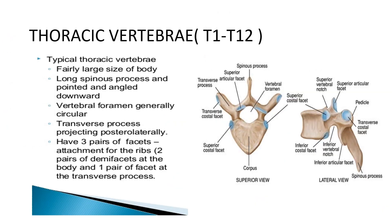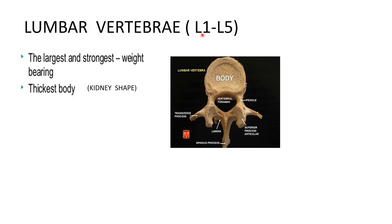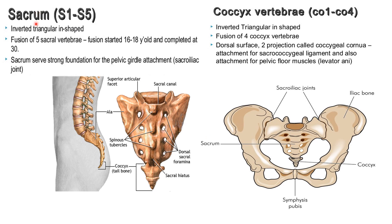Thoracic vertebrae have a large, heart-shaped body and their transverse process contains a facet for attachment of the ribs. Lumbar vertebrae (L1–L5) are the strongest and largest because they are weight-bearing; they have the thickest body and their body is kidney-shaped. The sacrum (S1–S5 fused) is inverted triangular in shape and forms a strong foundation of the pelvic girdle, joining the pelvic bone via the sacroiliac joint. The coccyx (C1–C4 fused) is also inverted triangular in shape and forms part of the pelvic girdle.